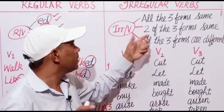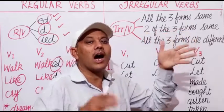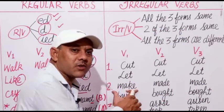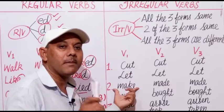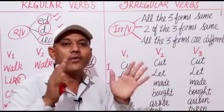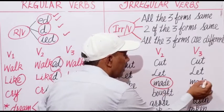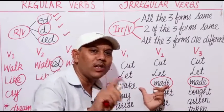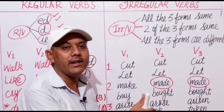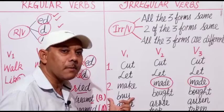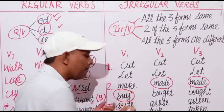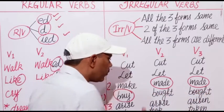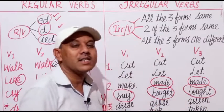The second type is where two of the three forms are same except the base form of the verb. For example, 'make' — this is the base form V1. The other two forms V2 and V3 are the same: made, made. This is known as an irregular verb because they have no regular forms; they do not end in -d, -ed, or -ied. Next is 'buy' — the base form is buy, meaning to purchase something. Its other two forms are the same: bought, bought.